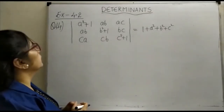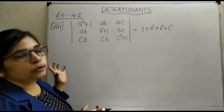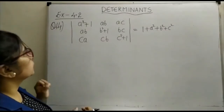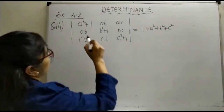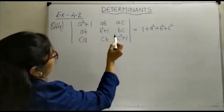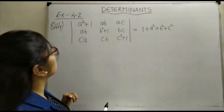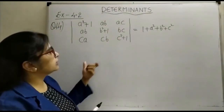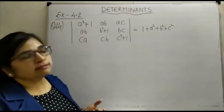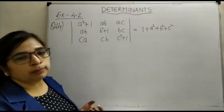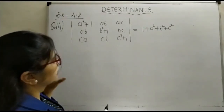Hello friends, today in determinants we are here to see Exercise 4.2, question number 14. We have to prove that the determinant with first row (a²+1, ab, ac), second row (ab, b²+1, bc), third row (ca, cb, c²+1) is equal to 1 + a² + b² + c². This is a little bit tricky question.